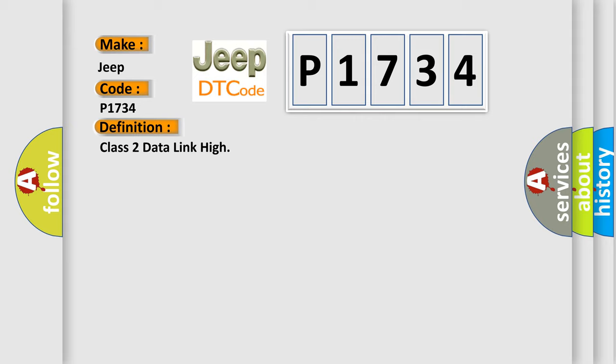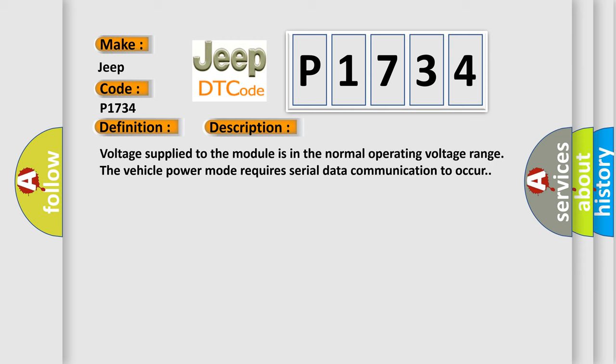And now this is a short description of this DTC code. Voltage supply to the module is in the normal operating voltage range. The vehicle power mode requires serial data communication to occur.